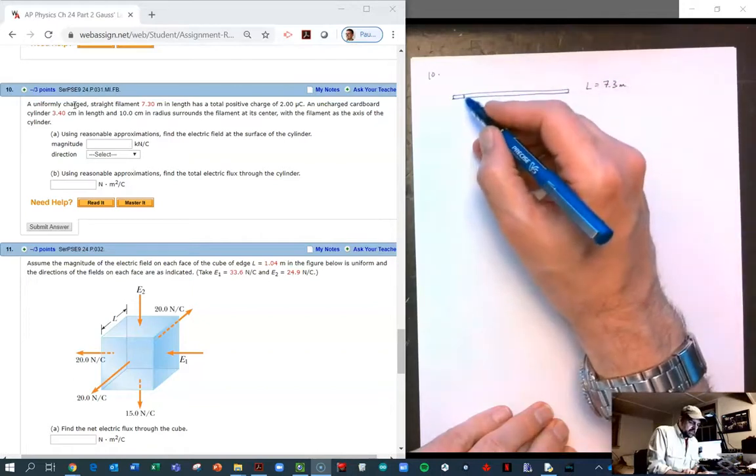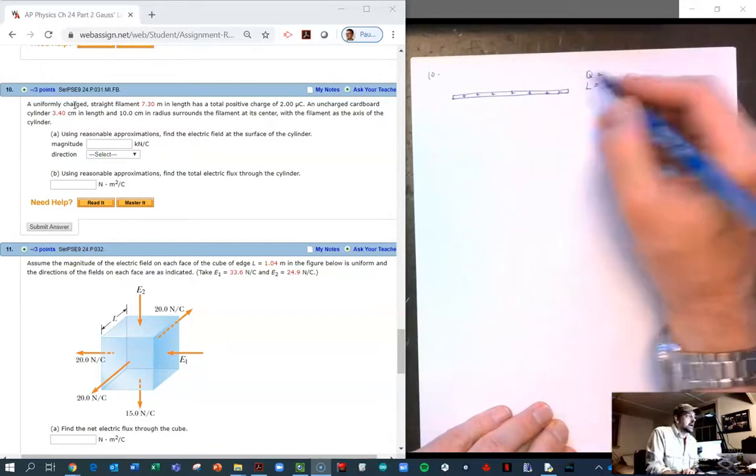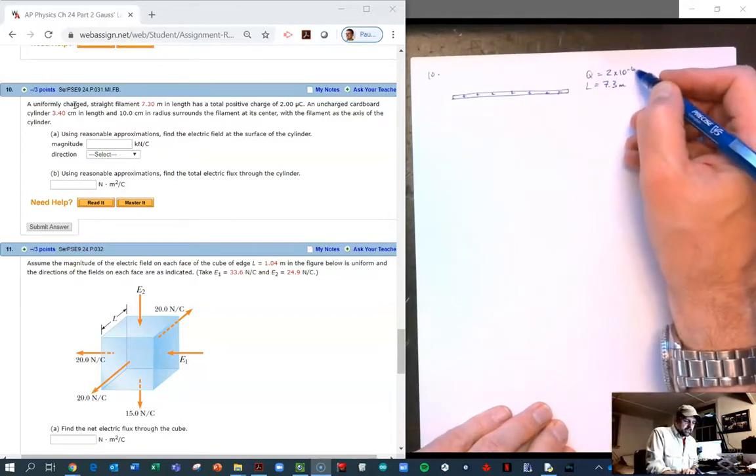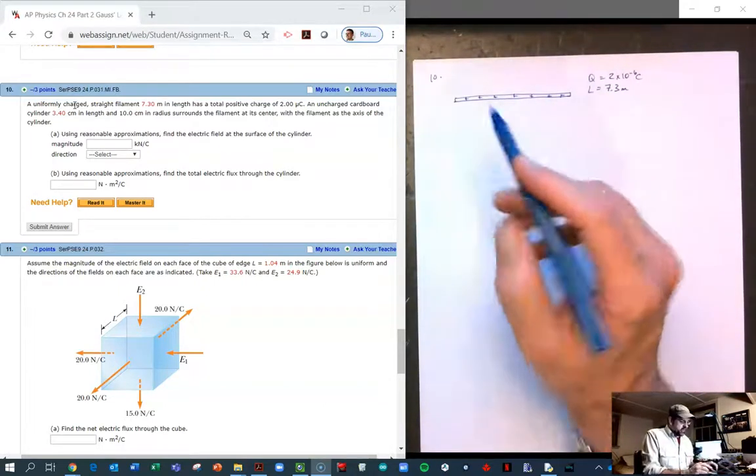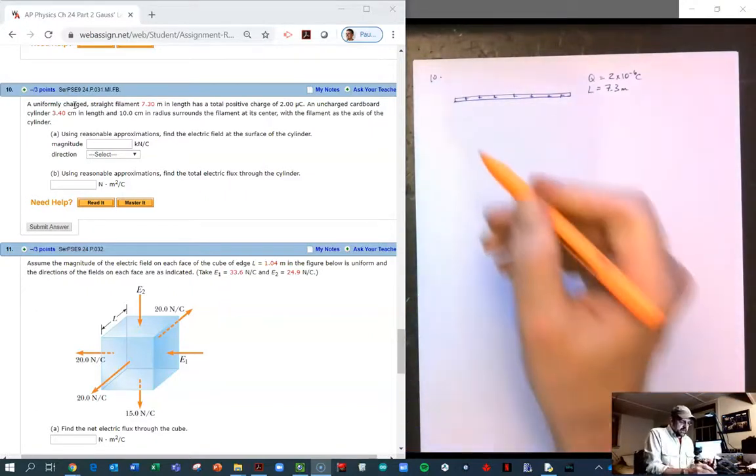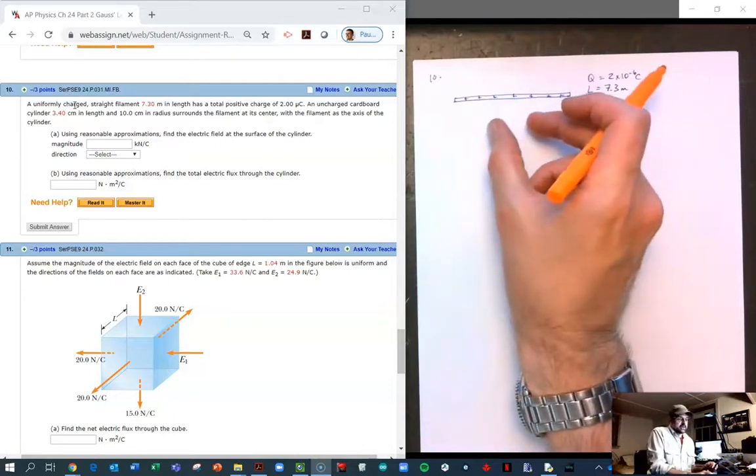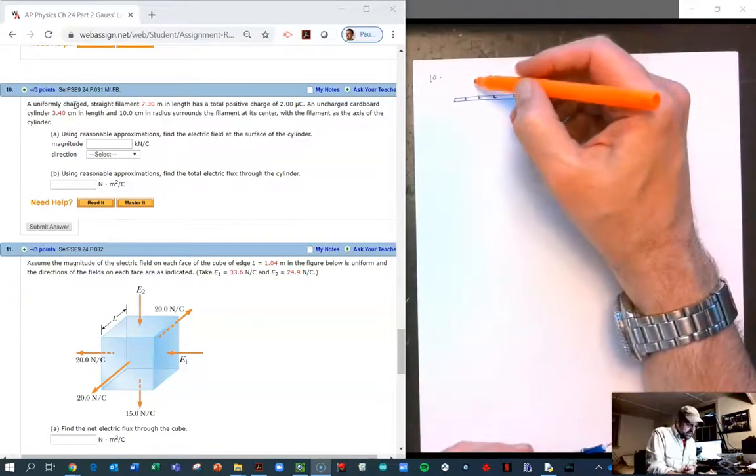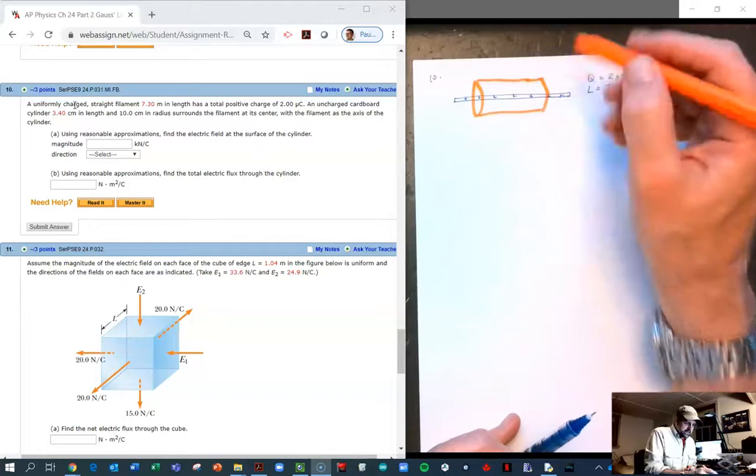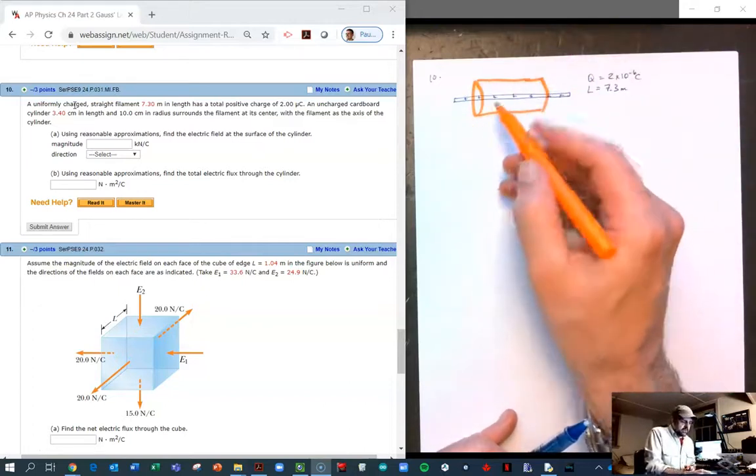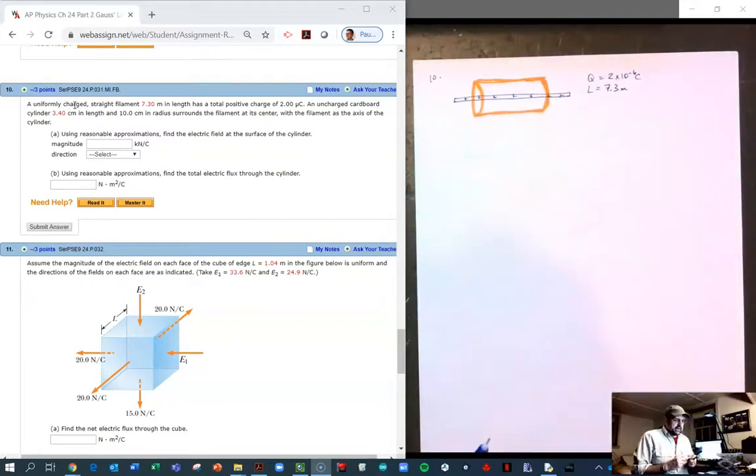The length of this is 7.3 meters and it has a total positive charge. The charge on the entire rod is 2 microcoulombs. Then we place a tiny cardboard tube around it. I'm not going to draw it to scale, but this is long, this is 7 meters, and our cardboard tube is only 3 centimeters in length. The whole reason we can think about this as a tiny cardboard tube is not my Gaussian surface, but I'm going to treat it like it is.